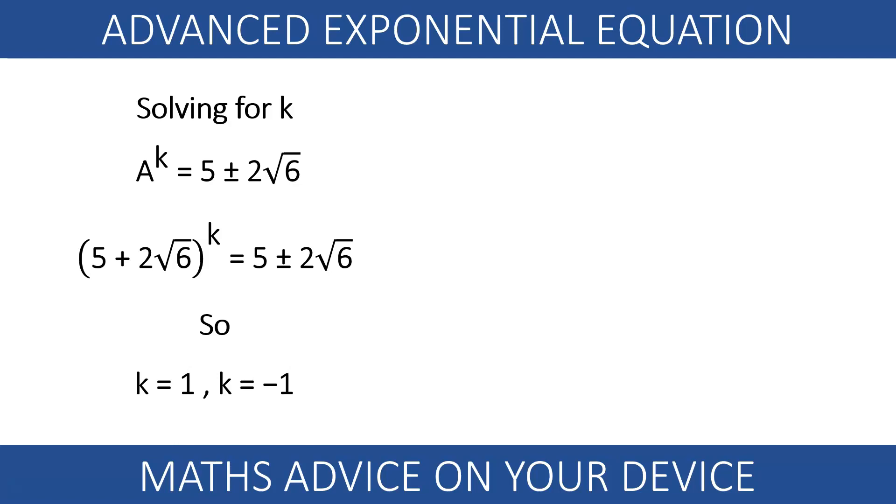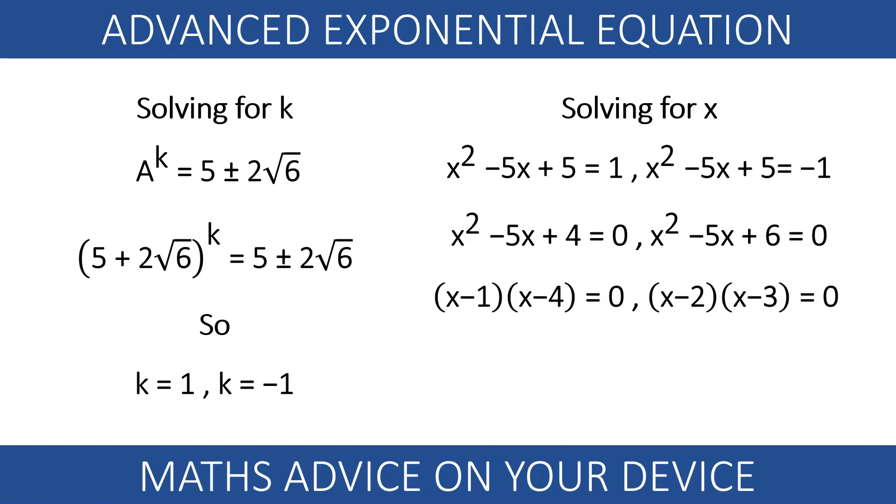Remember that k is what we call our quadratic x squared minus 5x plus 5. Using the solutions for k, we end up with the quadratics x squared minus 5x plus 4 equals 0 and x squared minus 5x plus 6 equals 0. We factorize both equations and we end up with 4 solutions.